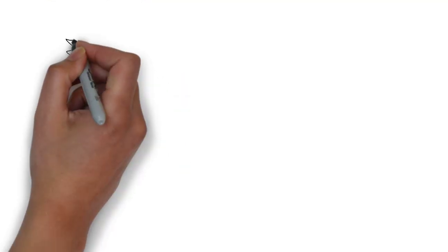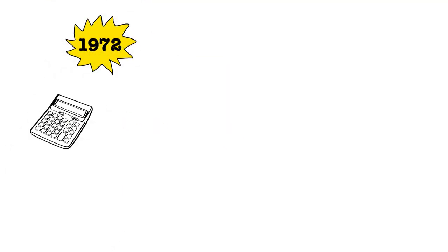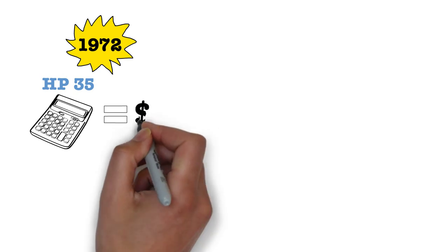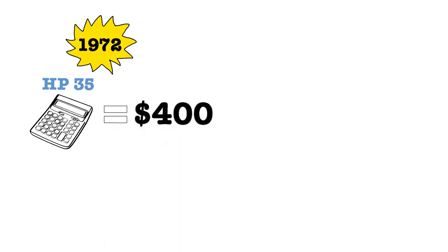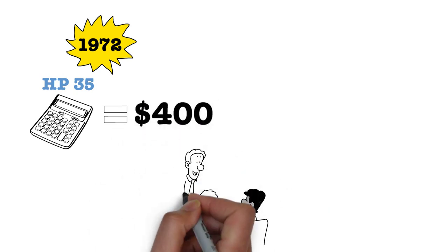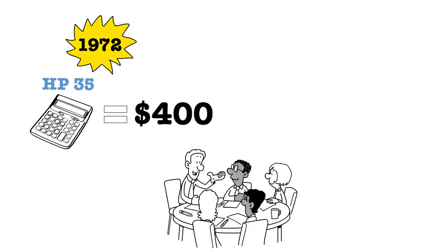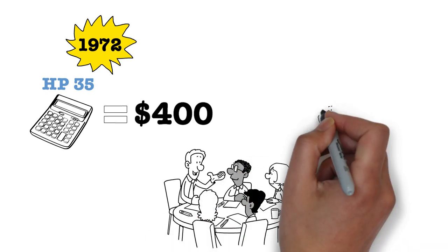In 1972, HP came up with the HP35 scientific calculator, their first ever scientific calculator, and they wanted to sell it to the market at $400 each. They hired a market research firm to figure out if there was indeed a market for an HP calculator at a price point of $400.